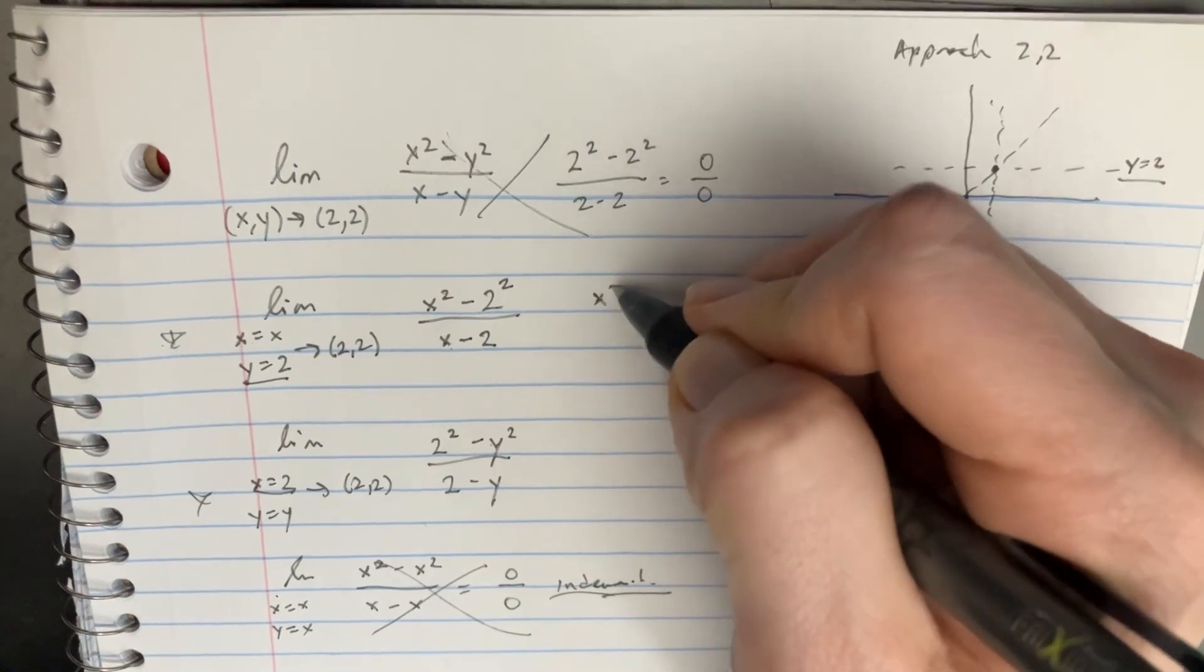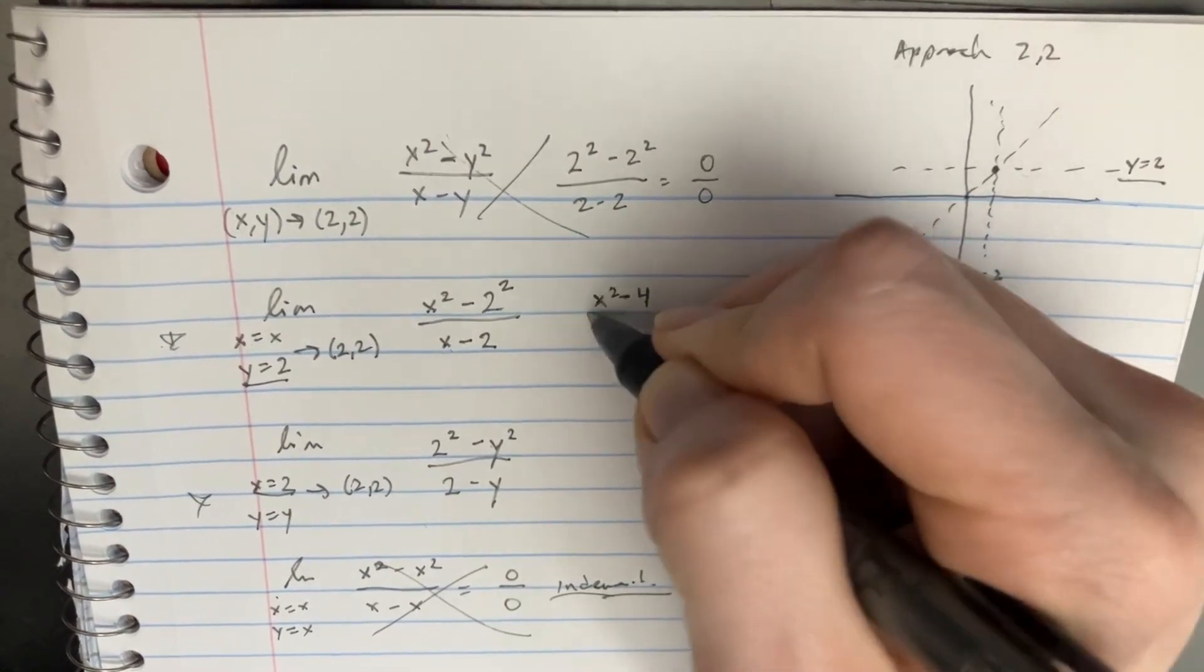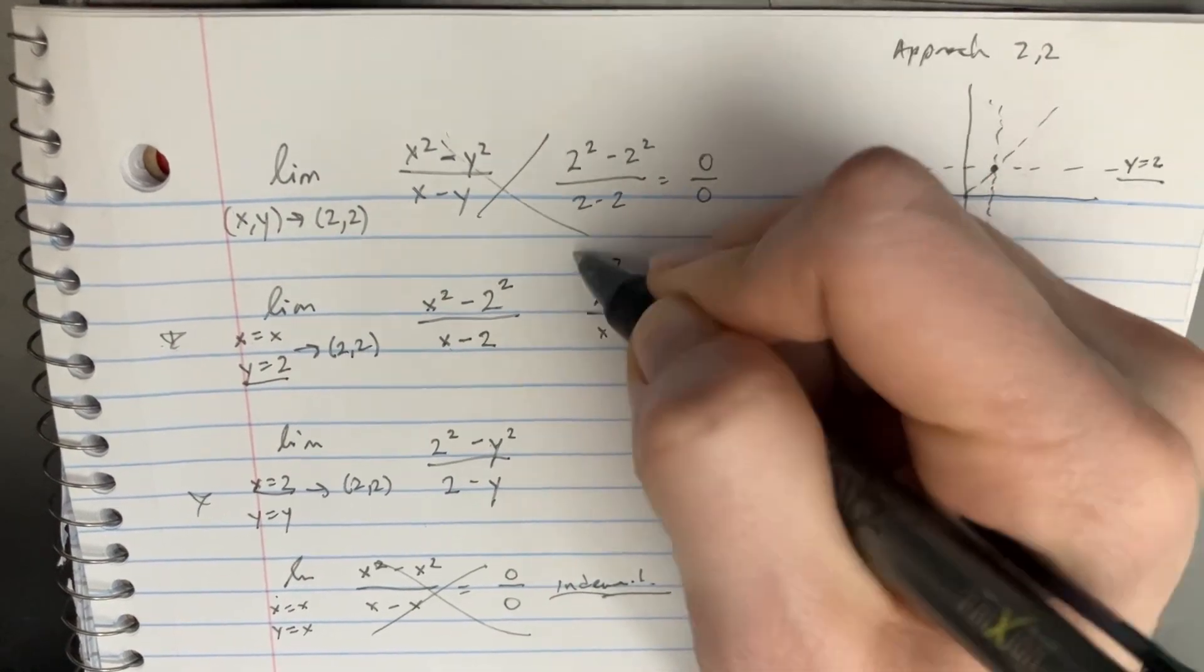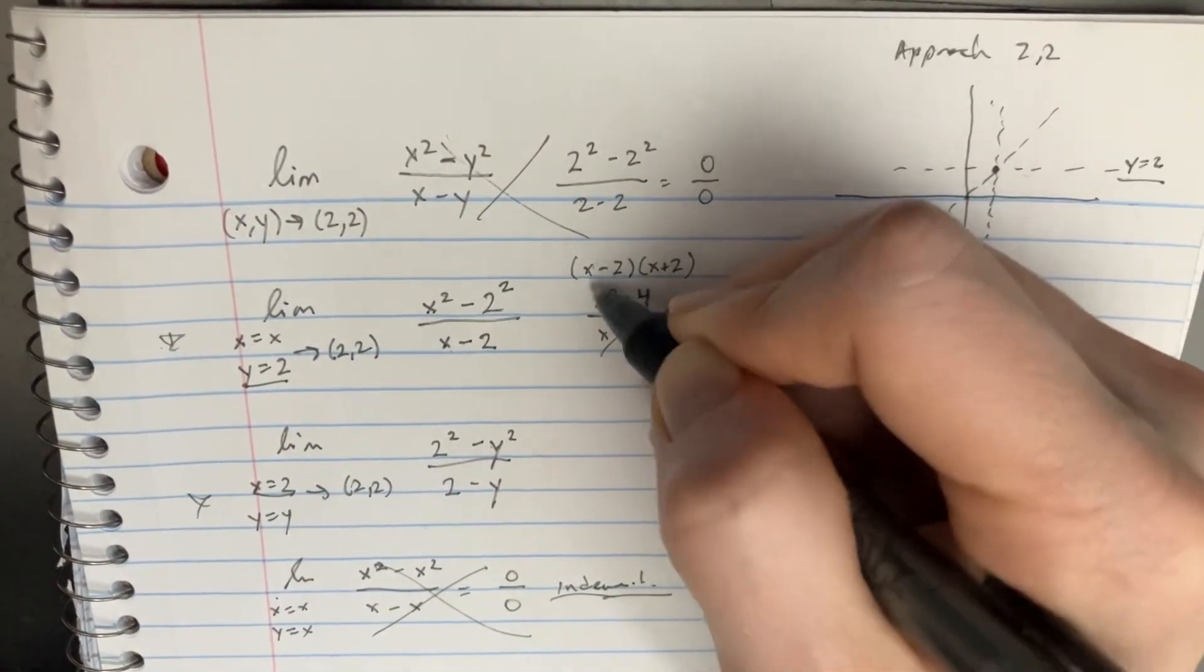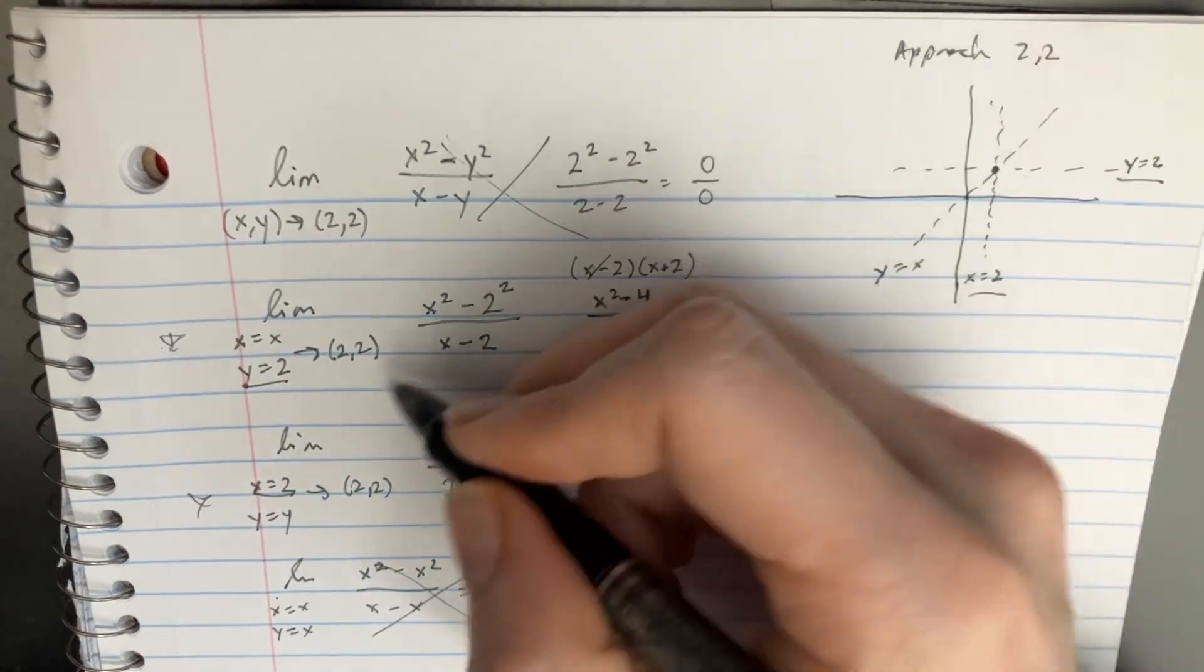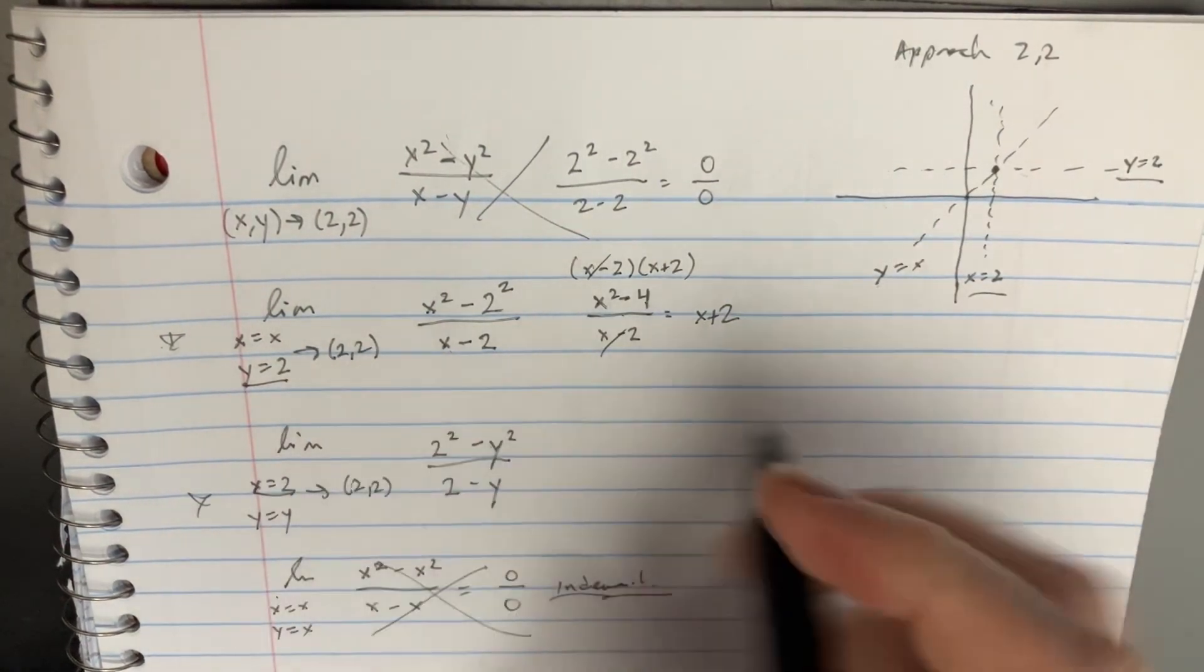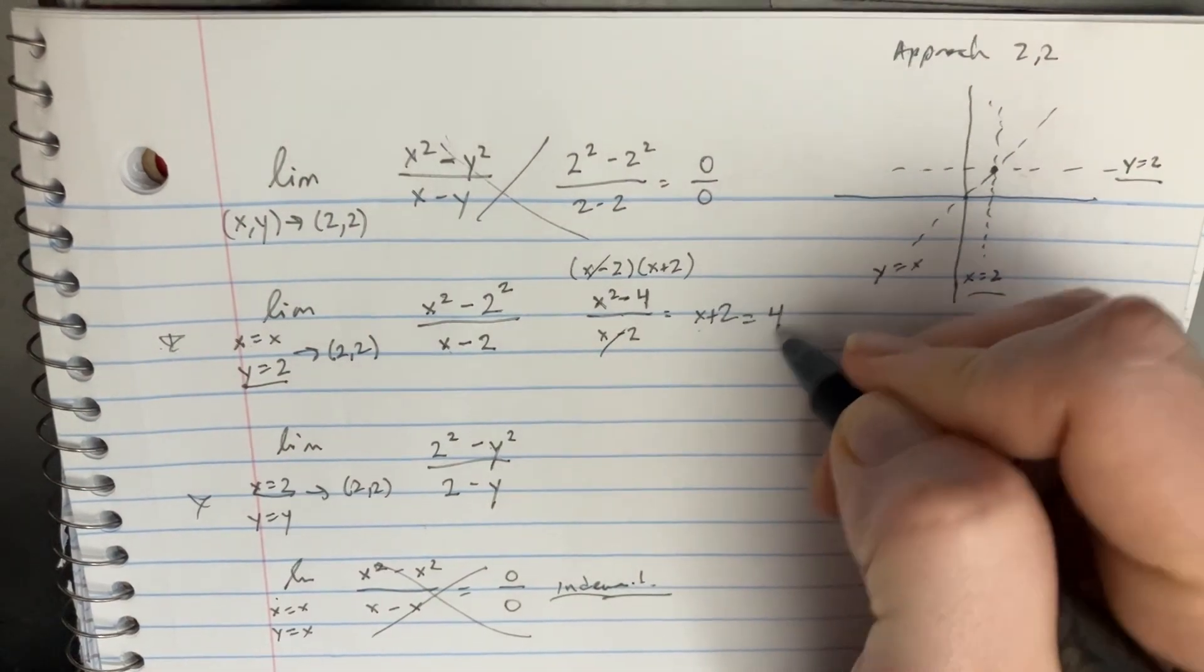So let's see. If we solve this, x² - 4 divided by x - 2, this will become (x - 2)(x + 2) at the top. So we cancel these out, we're going to get x + 2. If we plug in x goes to 2, then that's just going to equal 4. Nice.